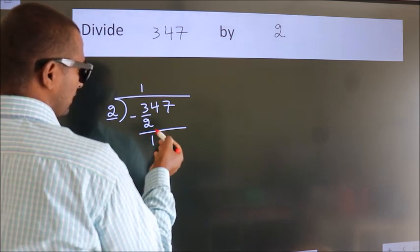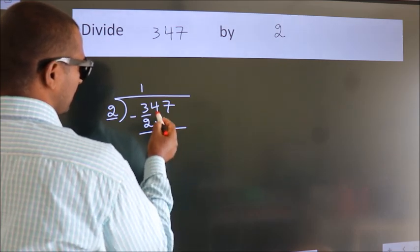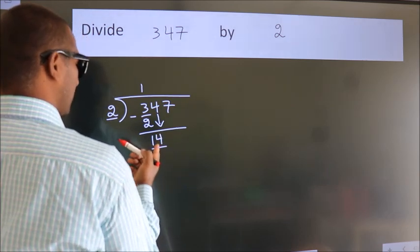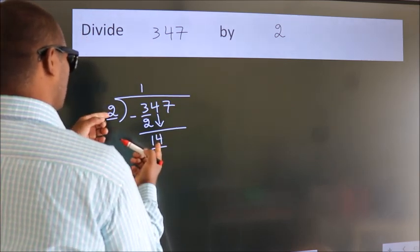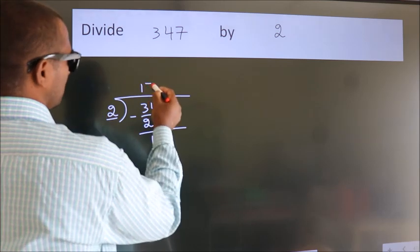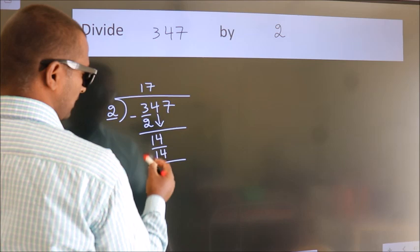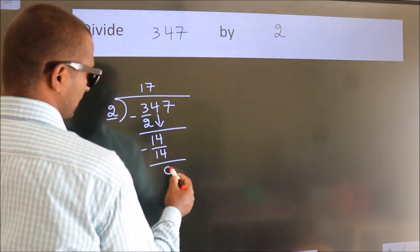After this, bring down the beside number. So 4 down. So 14. When do we get 14? In 2 table, 2 7s 14. Now we subtract. We get 0.